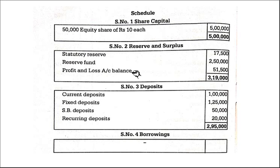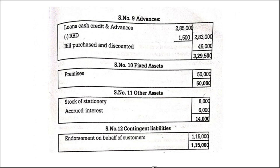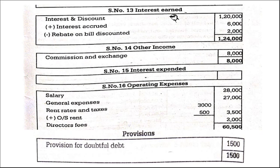Whatever balance sheet items there are, they require information from the profit and loss account, so you can leave it blank and fill later. Then current deposits, fixed deposits, savings bank deposits, recurring deposits — come under deposits. Borrowings — there are none. Other liabilities and provisions. Cash and balances with RBI. Money at call and short notice, balances with other banks — Schedule 7. Schedule 8, investments: Indian government securities plus another investment — total investments. What I suggest is that if you have to prepare profit and loss account and balance sheet, it is better to prepare the profit and loss account schedules first — Schedule 13, 14, 15, 16 — then prepare Schedules 1 to 12.